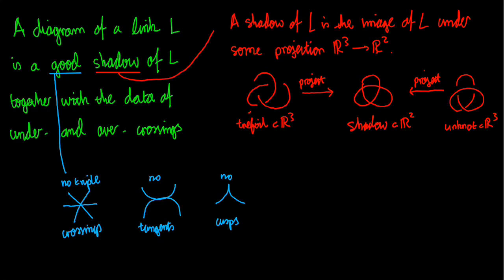What is a good shadow? You see, I can make all sorts of mistakes when I take my shadow. We say that the shadow is good if we didn't make any of those mistakes. It's a good shadow if there are no triple crossings - we only want two strands to cross each other at the same time. There should be no tangents, which is to say the image should either cross itself properly or not touch itself at all. And finally, there are no cusps - there's no sharp points in the image.